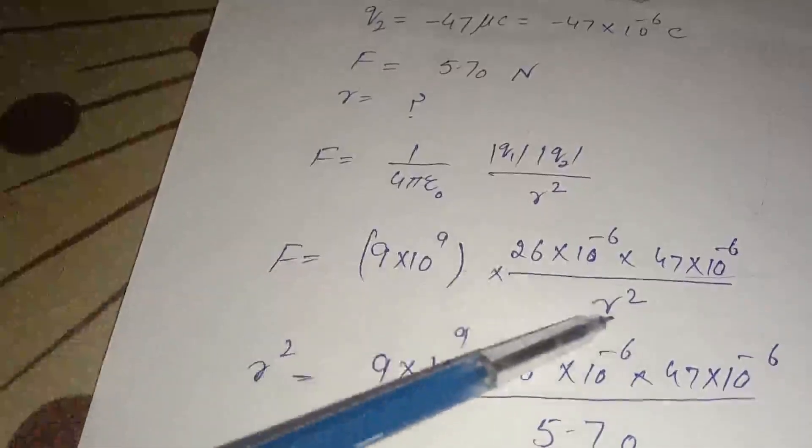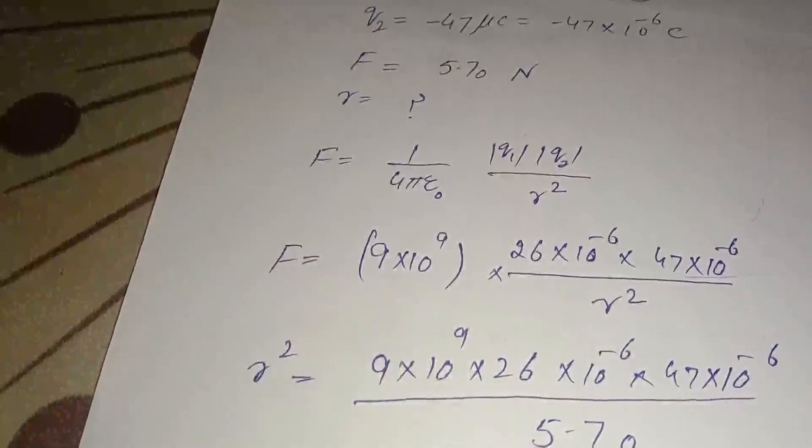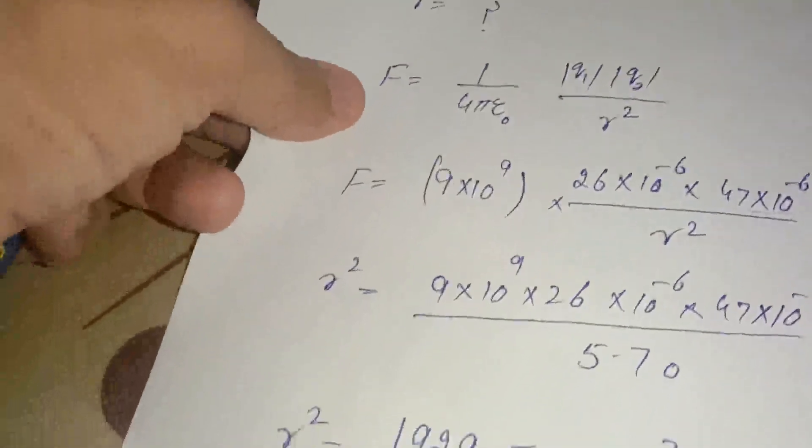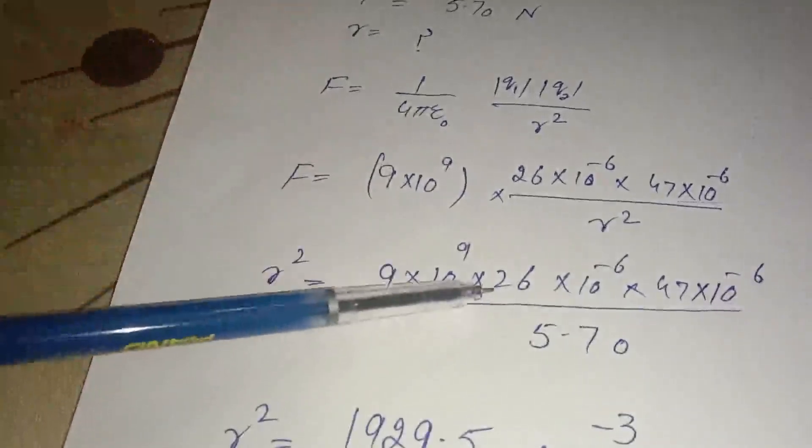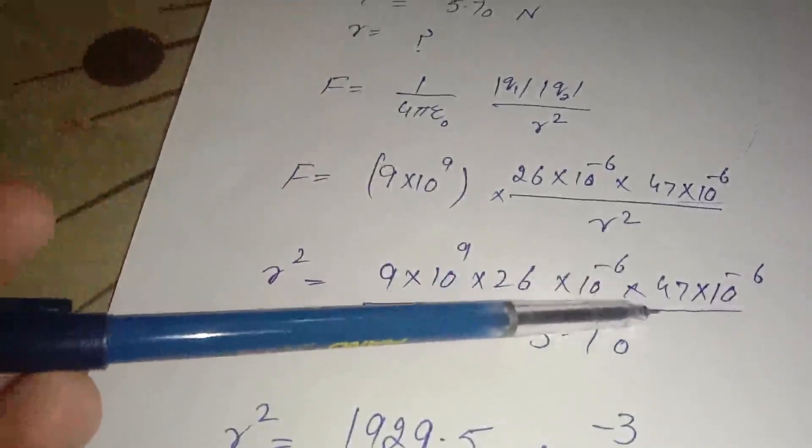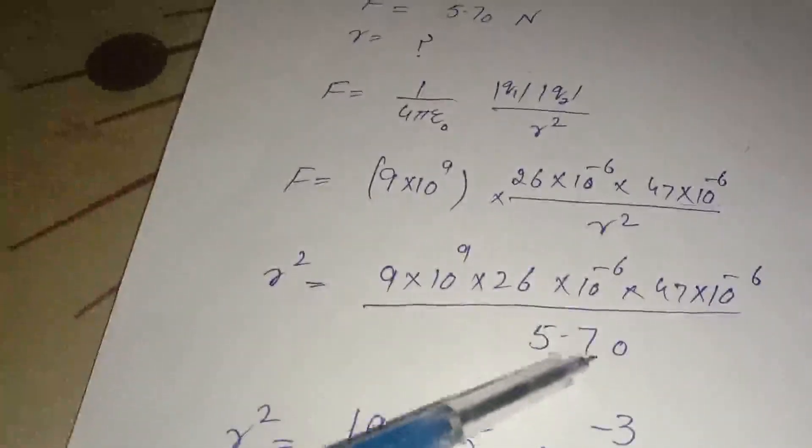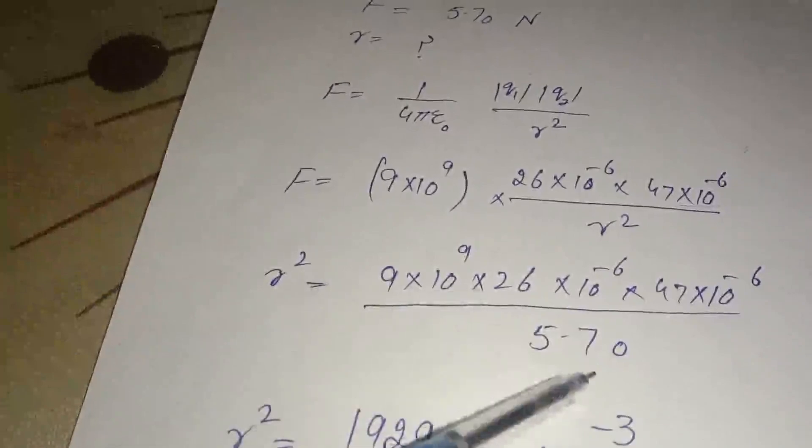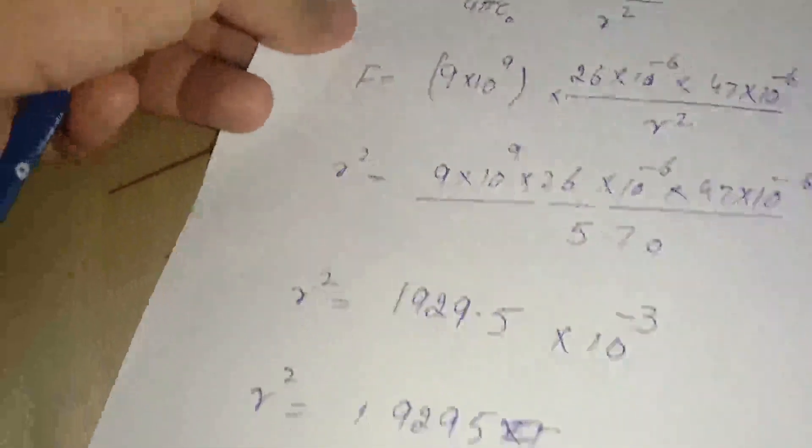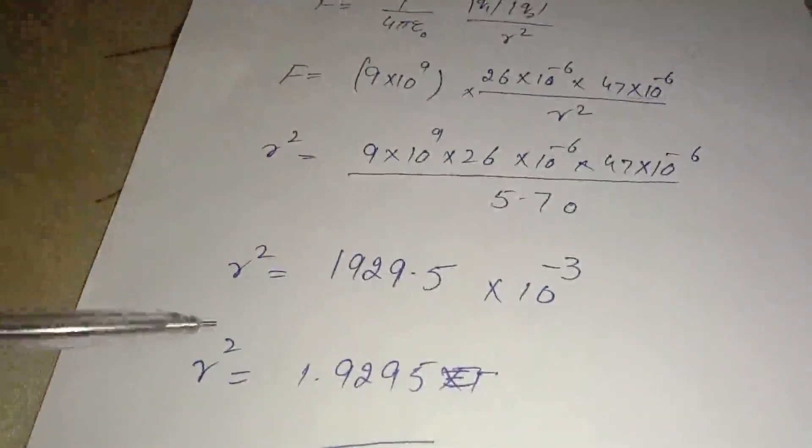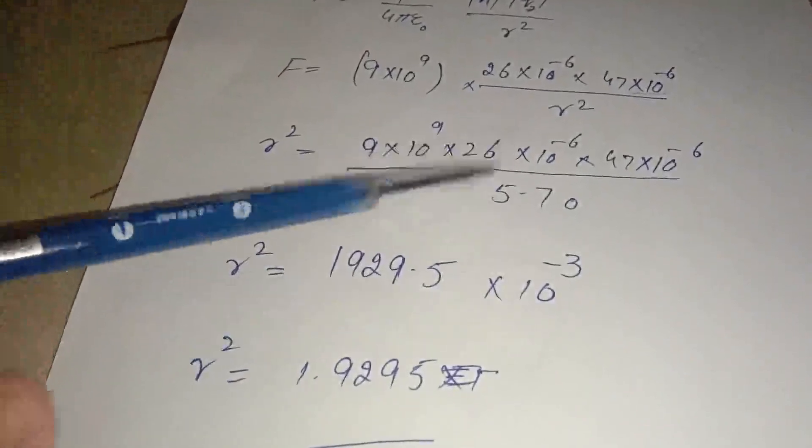r² = (9 × 10^9 × 26 × 10^-6 × 47 × 10^-6) / 5.7. 5.7 is the magnitude of force. When we use a calculator for simple calculation, the answer comes out to be r² = 1929.5 × 10^-3.